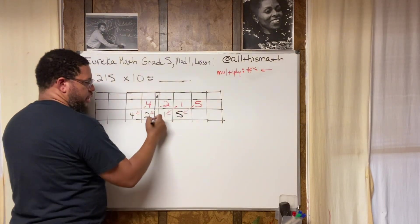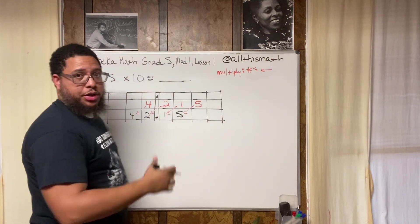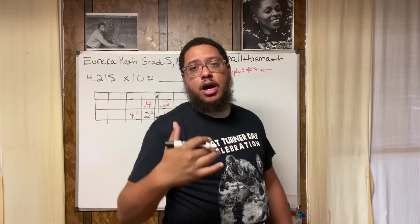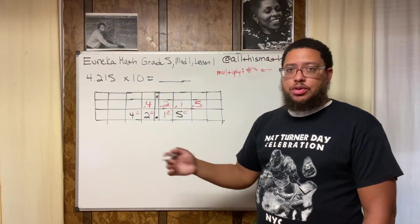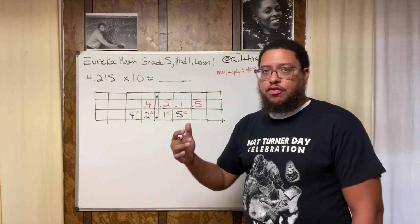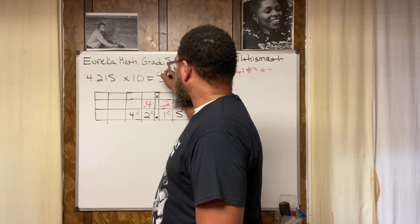So now, and then here's where my decimal point's going to go. Now we got 42.15, or 42 and 15 hundredths, 42.15. And that's the answer. That's the answer.